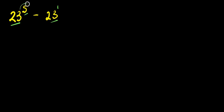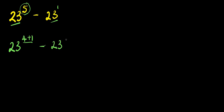Because of that, we are going to express this 5 as a summation of 4 and 1. So we have 23 to the power of 4 plus 1, and 4 plus 1 here is 5, then we have minus 23, and 23 to the power of 1 is the same thing as 23.